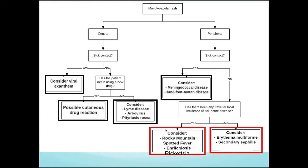For patients without sick contacts presenting with a peripheral maculopapular rash, think Rocky Mountain spotted fever - affects the wrists and ankles as well as palms and soles - and other tick-borne illnesses like ehrlichia and rickettsia. Lyme can also present with a peripheral targetoid lesion or diffuse maculopapular rash elsewhere. For non-tick-borne illnesses or patients who haven't traveled, consider erythema multiforme, which is also a targetoid lesion - the worst form being Stevens-Johnson syndrome, covered in the next lecture - as well as toxic shock. Secondary syphilis affects the palms and soles with a maculopapular rash.